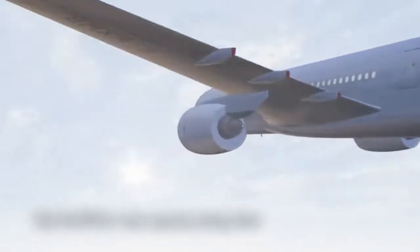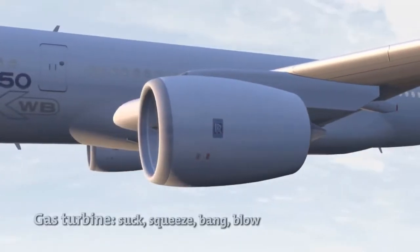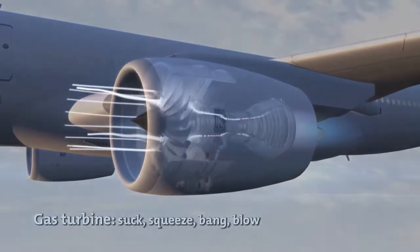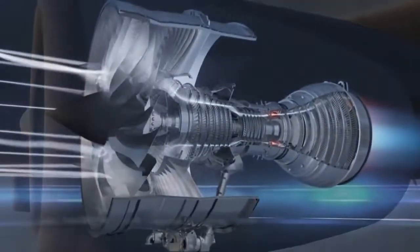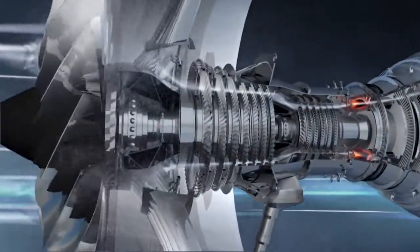In the case of the gas turbine on an airliner, air is sucked in via the large front fan. The majority of the air is directed around the engine as pure thrust.